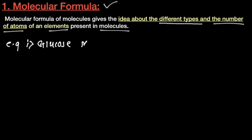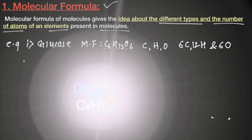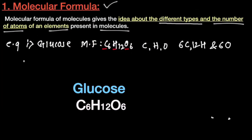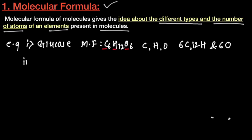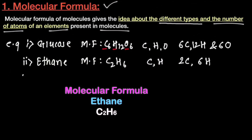For example, the molecular formula of glucose is C6H12O6. In the glucose molecule, carbon, hydrogen, and oxygen are present — 6 carbon atoms, 12 hydrogen atoms, and 6 oxygen atoms. For ethane, its molecular formula is C2H6, containing 2 carbon atoms and 6 hydrogen atoms.